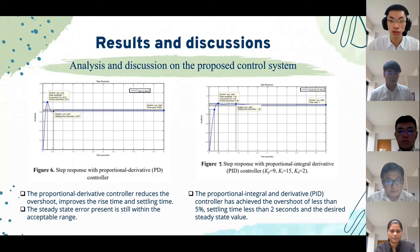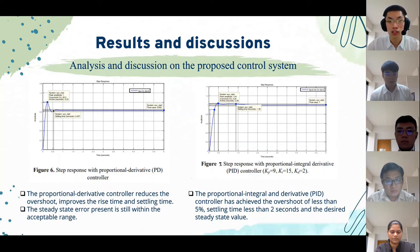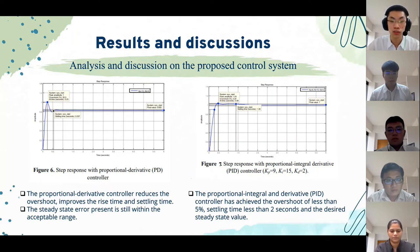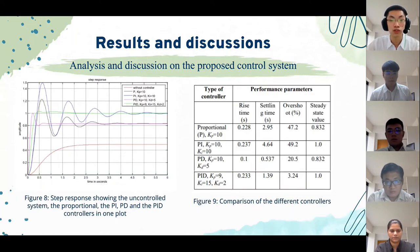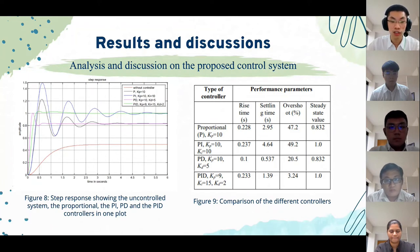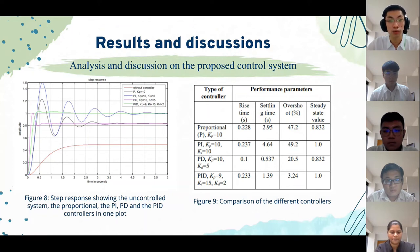The use of a PD controller reduces overshoot, improves rise time and settling time, and the steady-state error present is still within acceptable range. The use of the PID controller achieves overshoot of less than 5%, settling time of less than 2 seconds, and the desired steady-state value, as shown in this slide. Although the PID controller achieves the best results in terms of overshoot, settling time, and offset, due to cost considerations, the PD controller is applied in this system. Using a PD controller is sufficient to control the water level in this case.